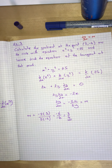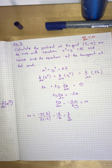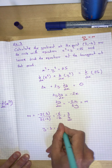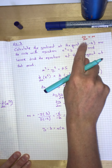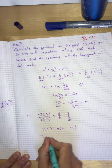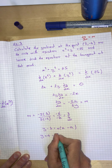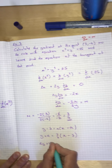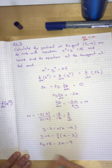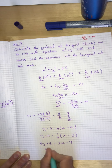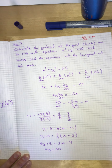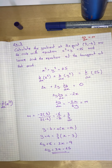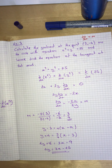m equals negative 2 times 3 all over 2 times negative 4, which gives us negative 6 over negative 8, which gives us 3/4. So the gradient at the point (3, −4) is 3/4. Hence, find the equation of the tangent at that point: y minus b equals m times (x minus a). We know the gradient is 3/4 and the coordinate point is (3, −4), so y plus 4 equals 3/4 times (x minus 3). Multiplying through: 4y plus 16 equals 3x minus 9, so 4y equals 3x minus 25. That is implicit differentiation.